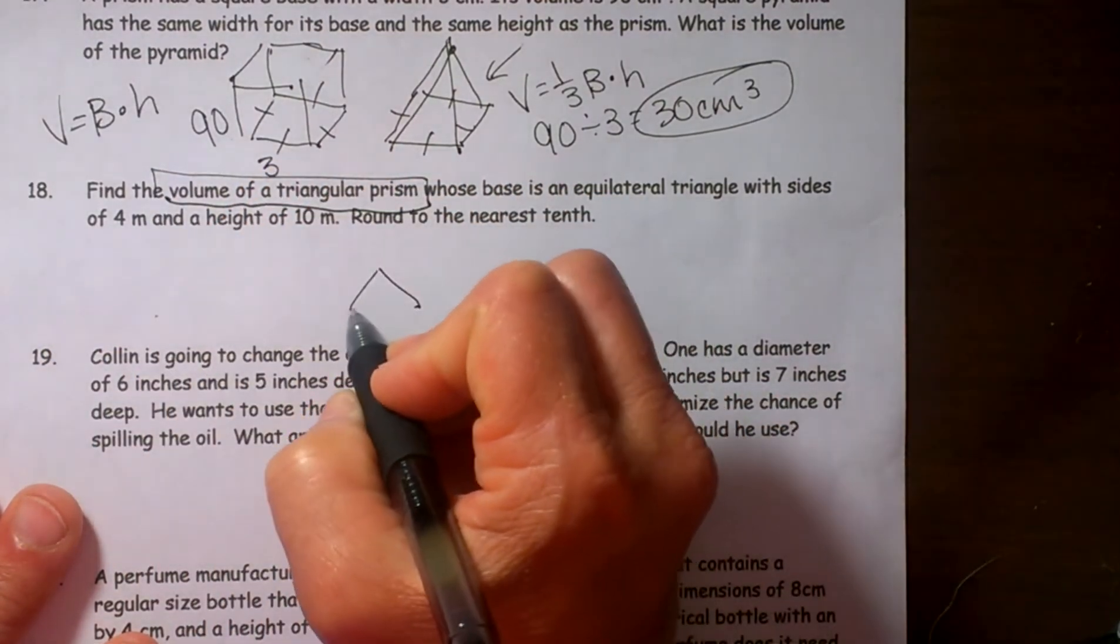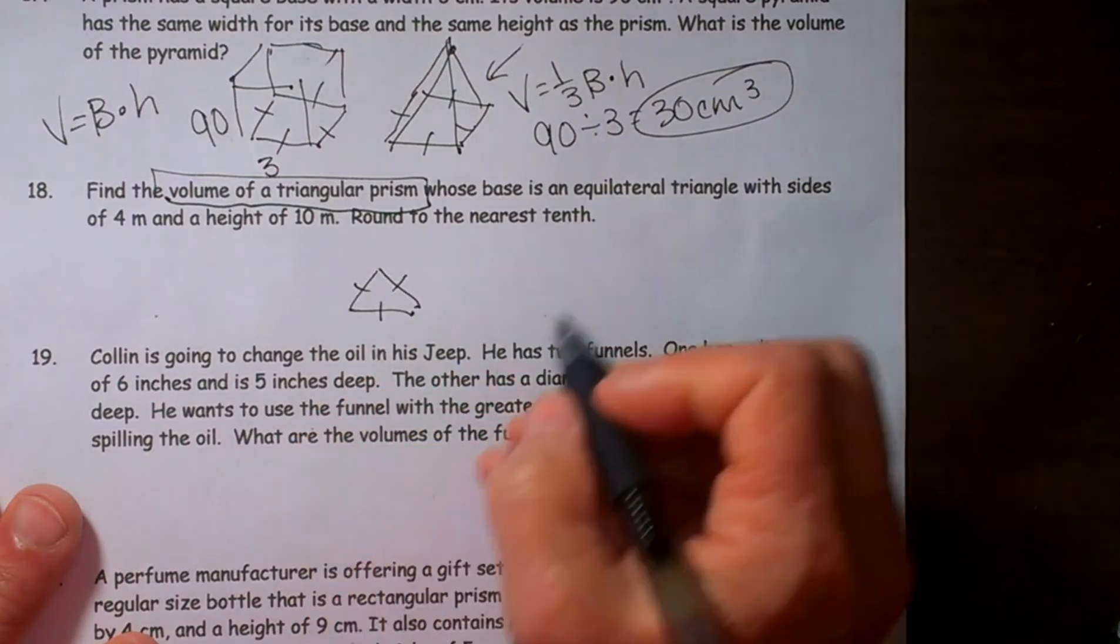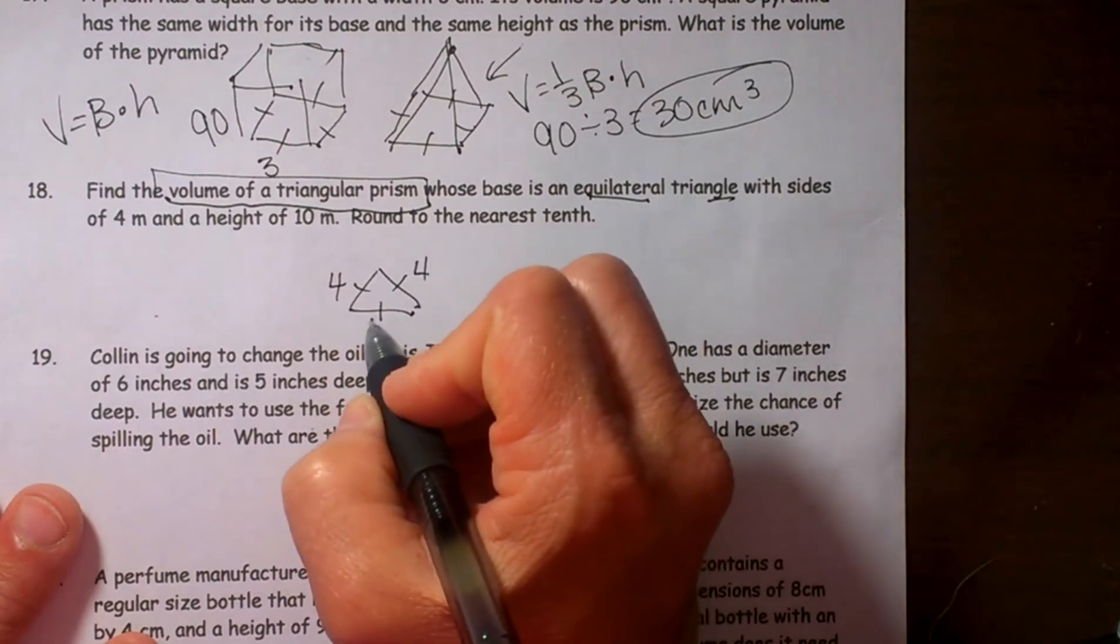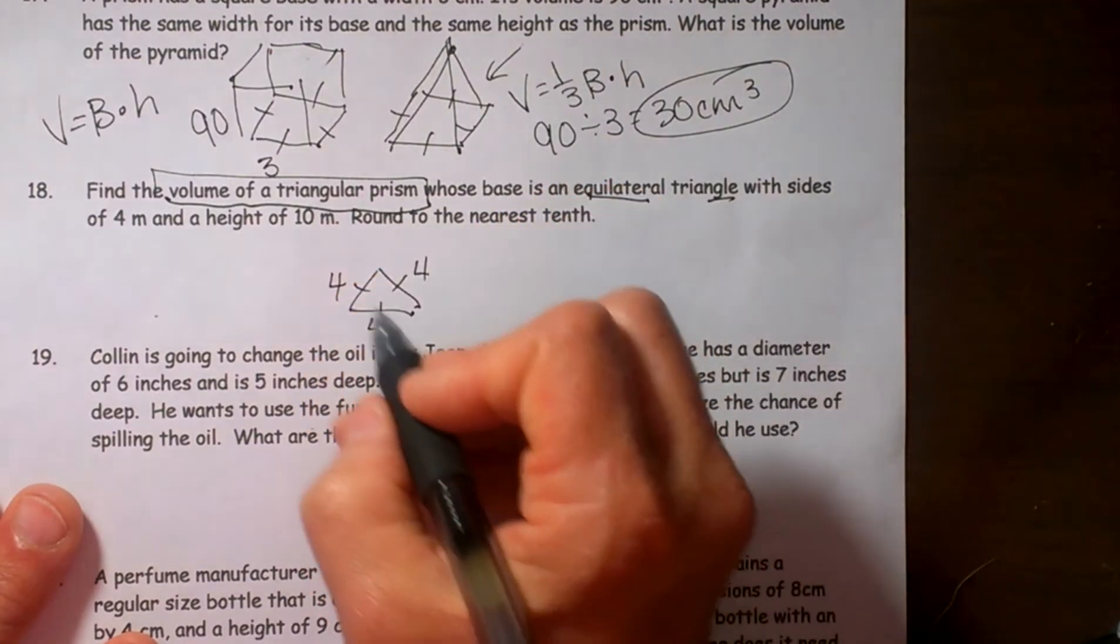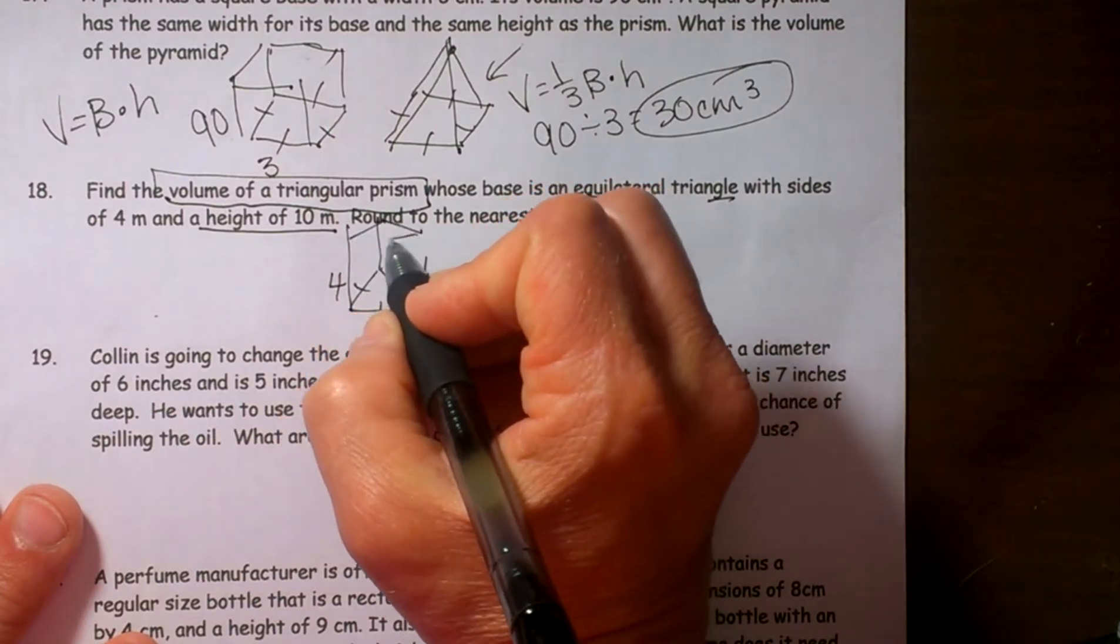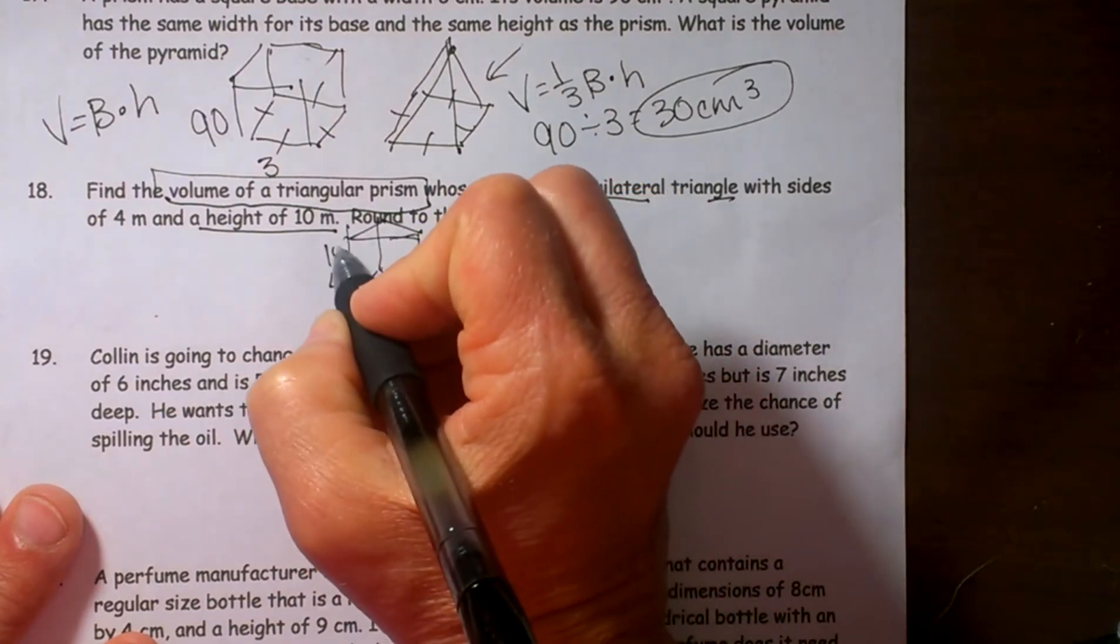They tell us it is equilateral, which means all sides are the same. So four, four, and four. And then the prism is ten centimeters tall. So the prism up here has to be ten high.